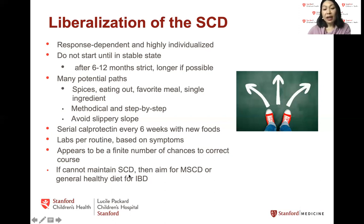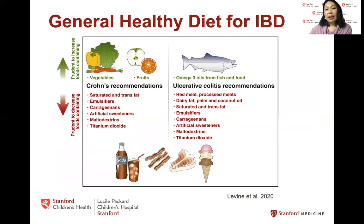If you cannot maintain the SCD for whatever reason, then aim for a modified SCD or a general healthy diet for IBD. This was published in April 2020 by Dr. Levine and his group, saying that people with Crohn's disease should eat lots of fruits and vegetables, avoid saturated and trans fats, emulsifiers, carrageenan, thickeners, artificial sweeteners, and other preservatives. People with ulcerative colitis should eat more omega-3 fatty acids from fish and in foods, and avoid red meats, processed meats, emulsifiers, and other artificial sweeteners and preservatives. Focus on a whole food diet.